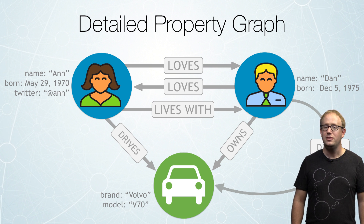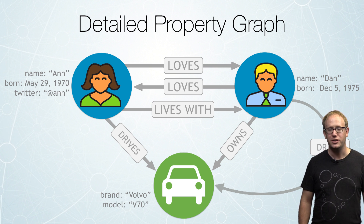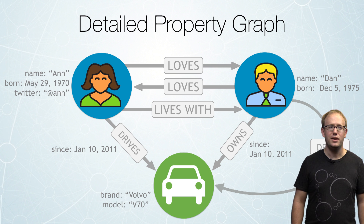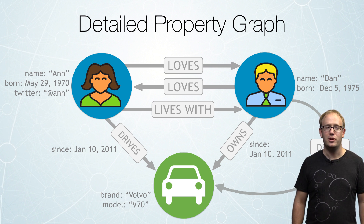But these relationships can have properties as well. So we can add a simple property for when Dan started owning the car and when Ann started driving the car.